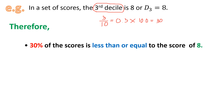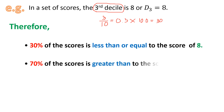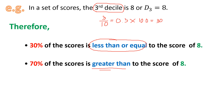For the complement, 100 minus 30 gives us 70. So 70% of the scores is greater than the score of 8, because we're having the complement of less than or equal, and that is greater than.